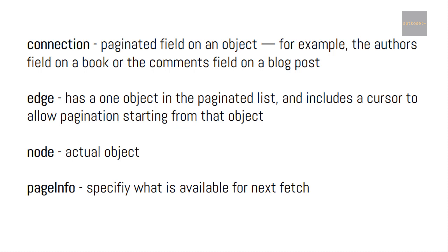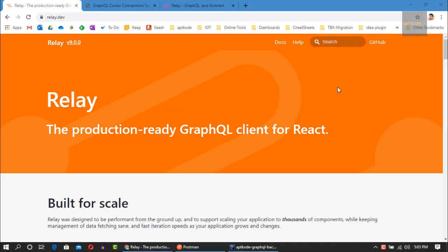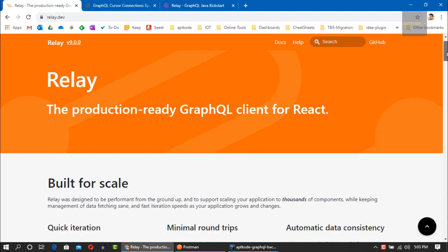An edge has a node, which is the actual object we are looking for. Inside the node we can also have connections. Additionally, there should be a page info object. Page info specifies information about the current set of pages — it has hasNextPage, hasPreviousPage, and what the start and end cursors are.